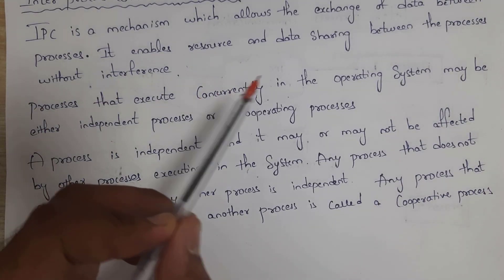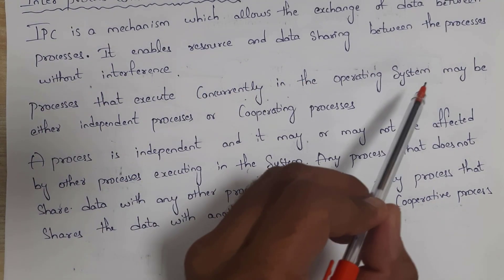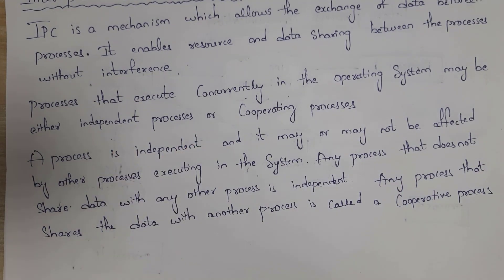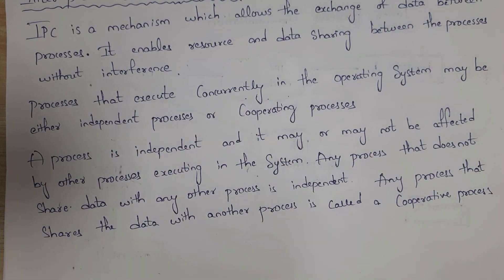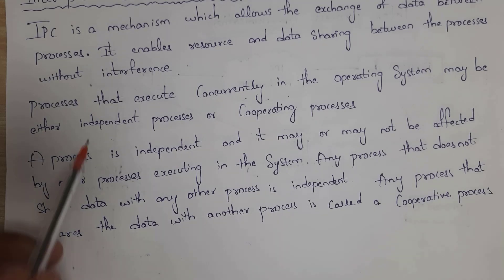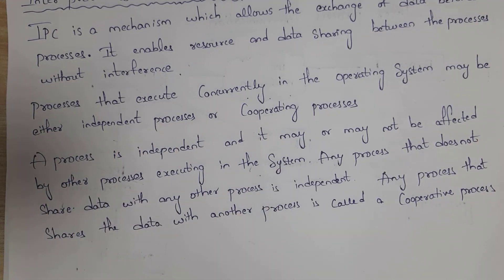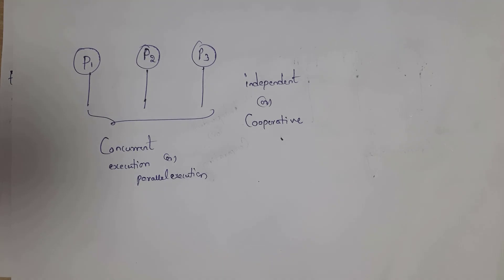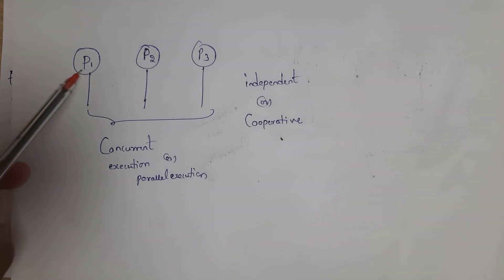Processes that execute concurrently in the operating system may be either independent processes or cooperative processes. Concurrently means parallel execution. Processes which execute in parallel are known as independent processes or cooperative processes. For example, let us consider there are 3 processes: process 1, process 2, and process 3.